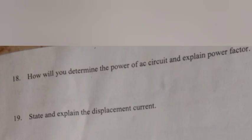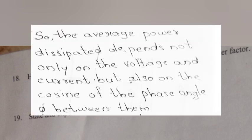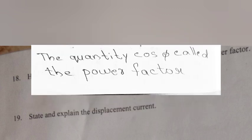Question 18. How will you determine the power of AC circuit and explain the power factor? Answer: The average power dissipated depends not only on the voltage and current, but also on the cosine of the phase angle phi between them. The quantity cos phi is called the power factor.